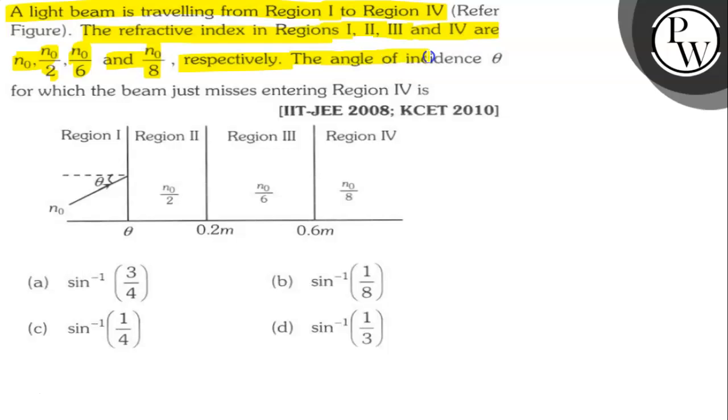The angle of incidence for which the beam just misses entering region 4 is what? Let's find out. Let's draw the diagram first.